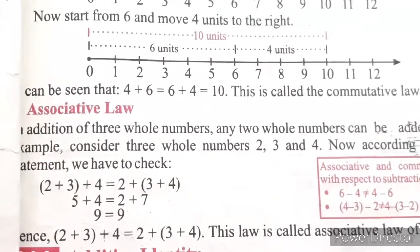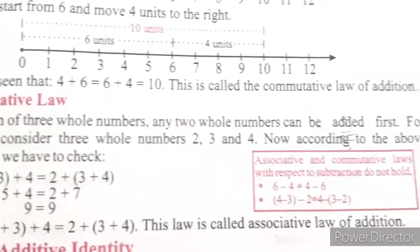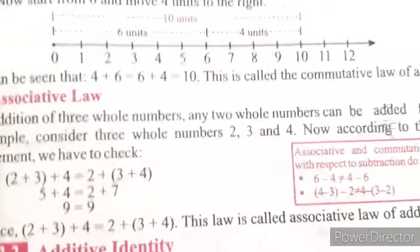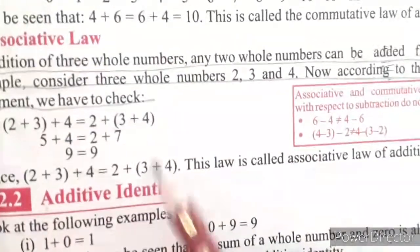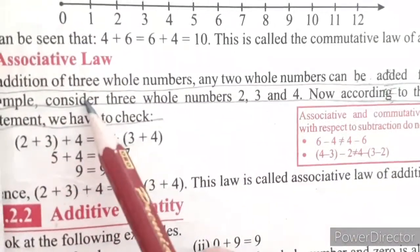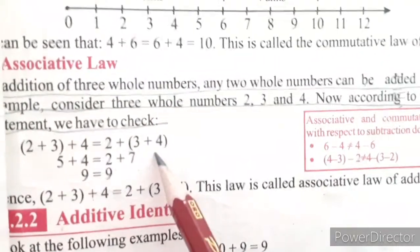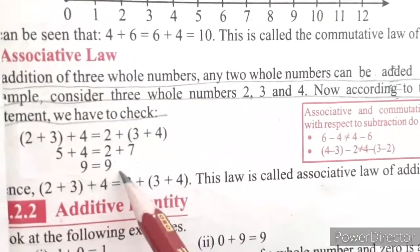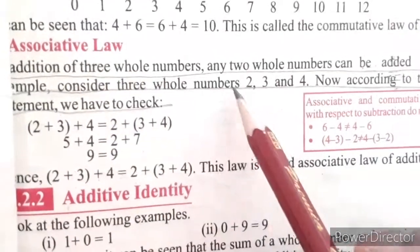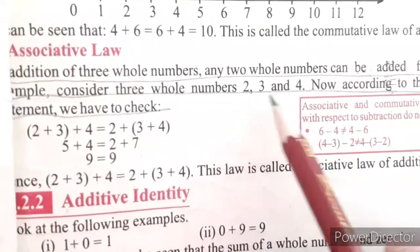You have to add three whole numbers. Any two whole numbers can be added first. If you add any two whole numbers first, your result will be the same. For example, consider three whole numbers: 2, 3, and 4. Now, according to the above statement, we have to check.